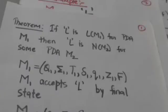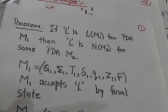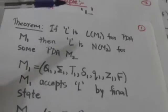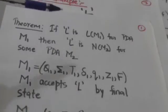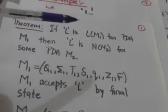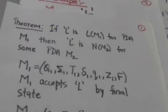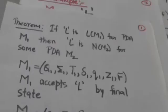Hello friends, welcome back. In this tutorial we will study a theorem. This theorem states that if the language L is accepted by pushdown automata M1 by final state, then there is a pushdown automata M2 which will accept the same language L by empty stack. Now suppose there is a pushdown automata M1 described by a 7-tuple which accepts the language L by final state. Q1 is the initial state of M1, and Z1 is the stack start symbol of M1. Now we have to construct pushdown automata M2 which will accept the same language L by empty stack.